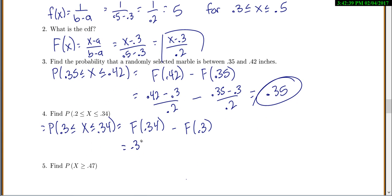So 0.34 minus 0.3 over 0.2 minus 0.3 minus 0.3 over 0.2. Now this whole thing will be 0, which makes sense because that is the bottom limit. And we get 0.2.